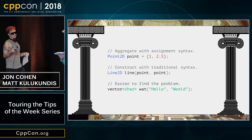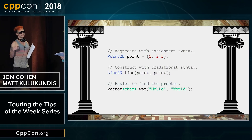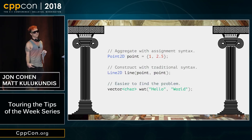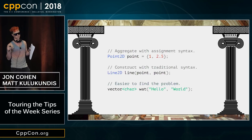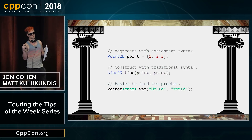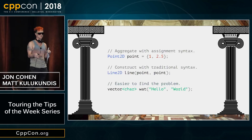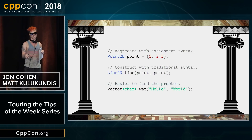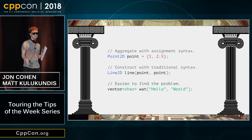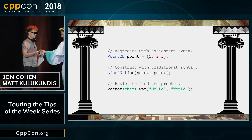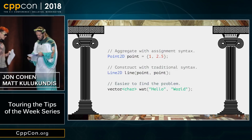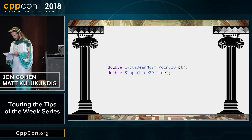When we're just doing a simple aggregation, when the type's representation is its essence, then we use assignment syntax with brace initialization. But if we're doing a constructor that has some more logic to it, use traditional constructor syntax, and that makes this weird vector nonsense a lot easier to find. But what about when those syntaxes aren't available?